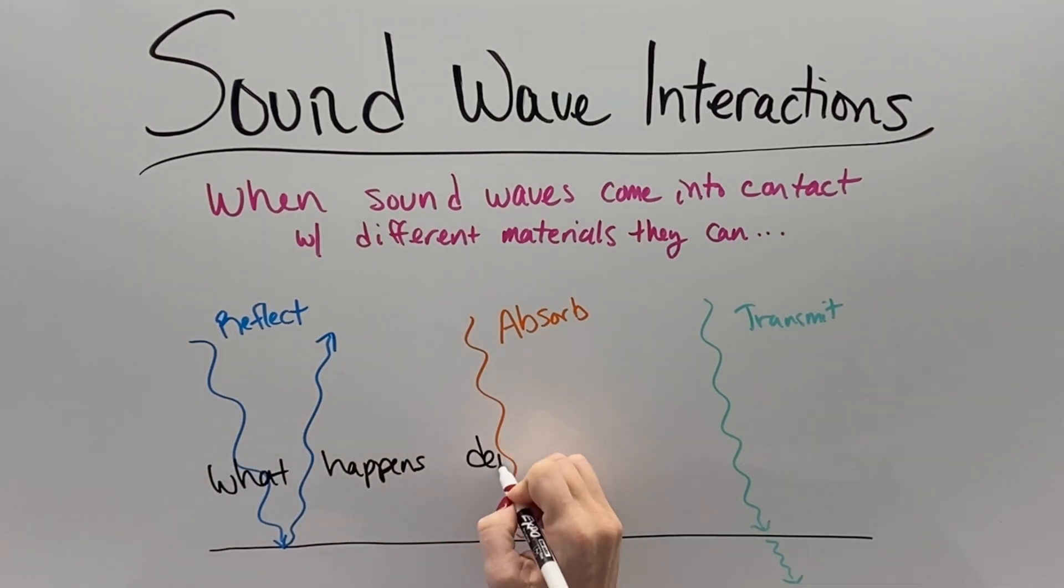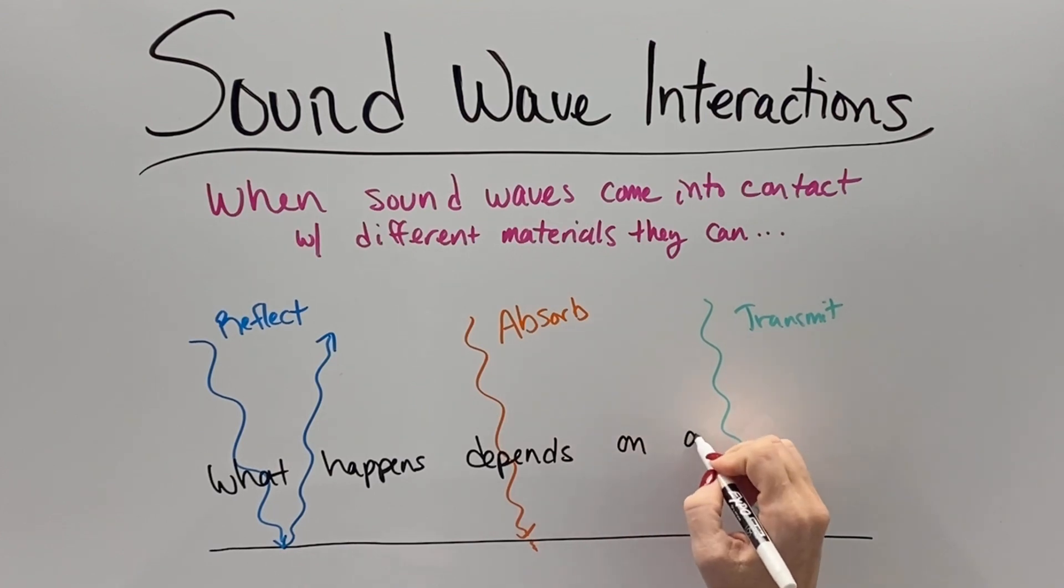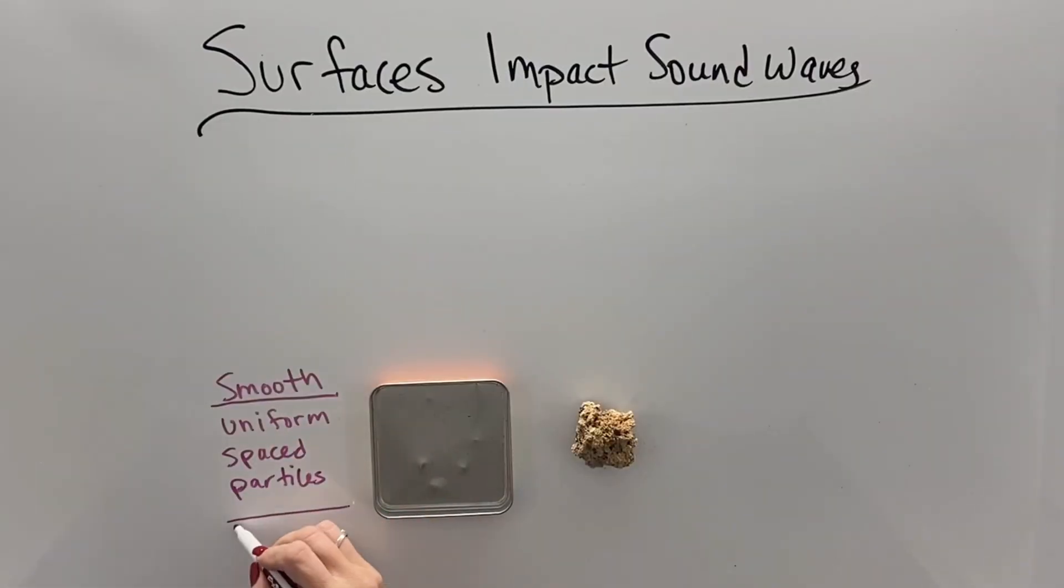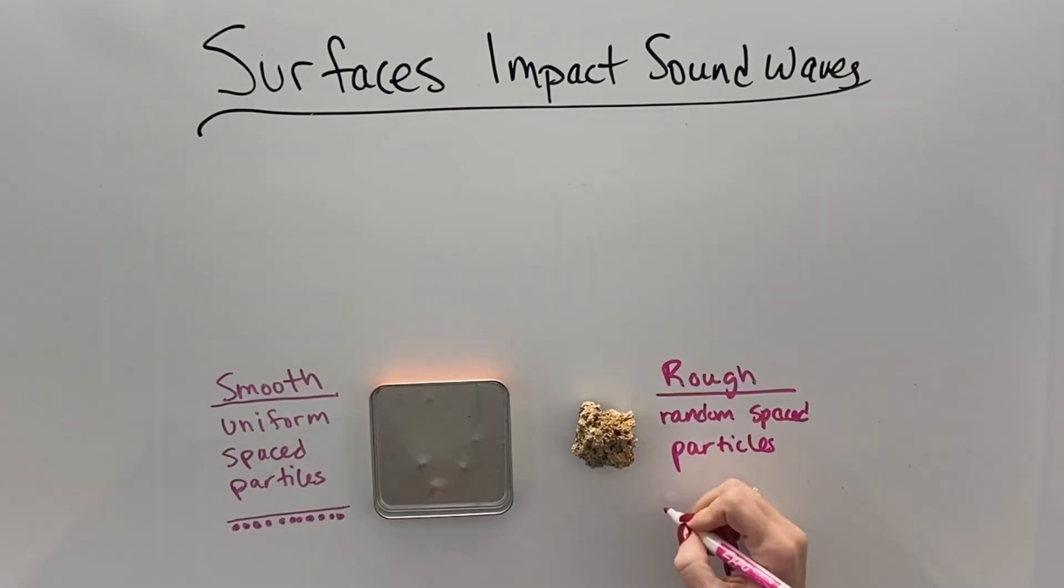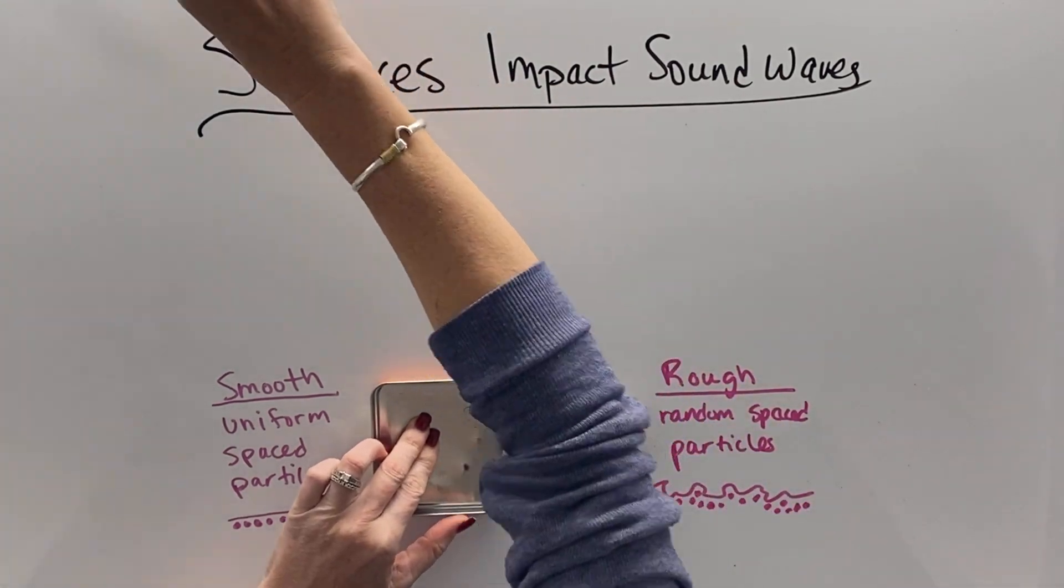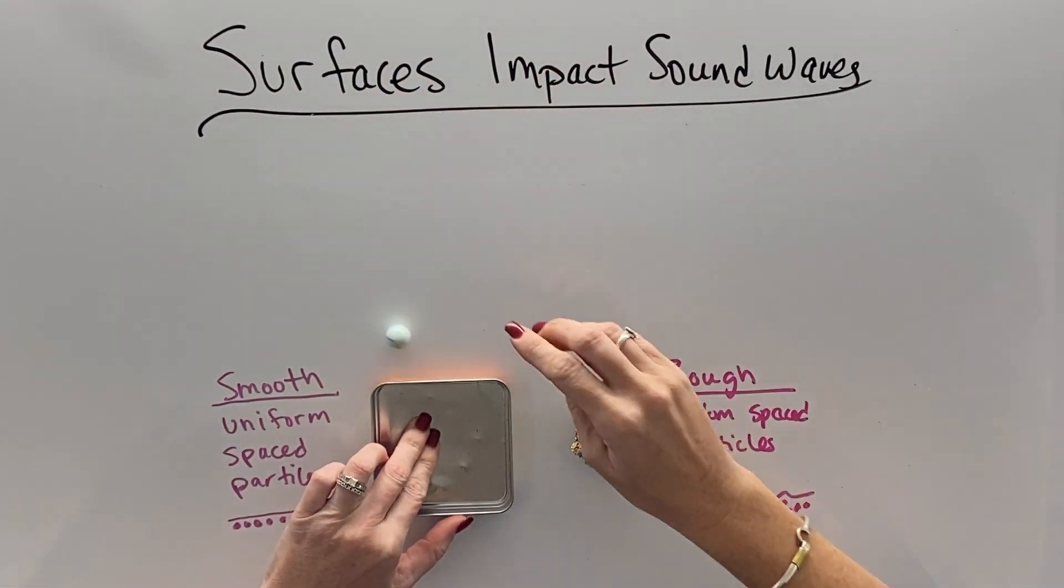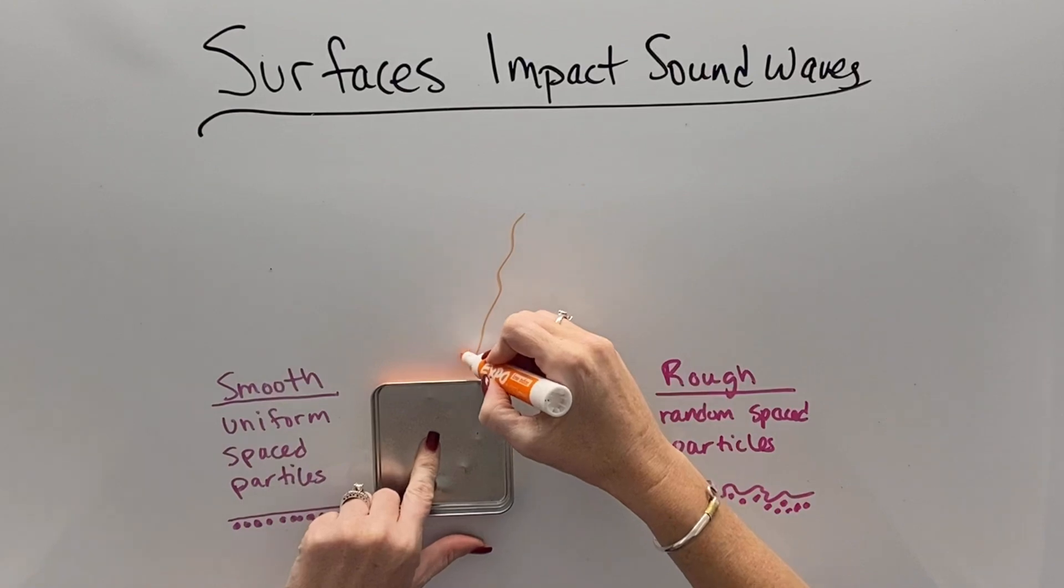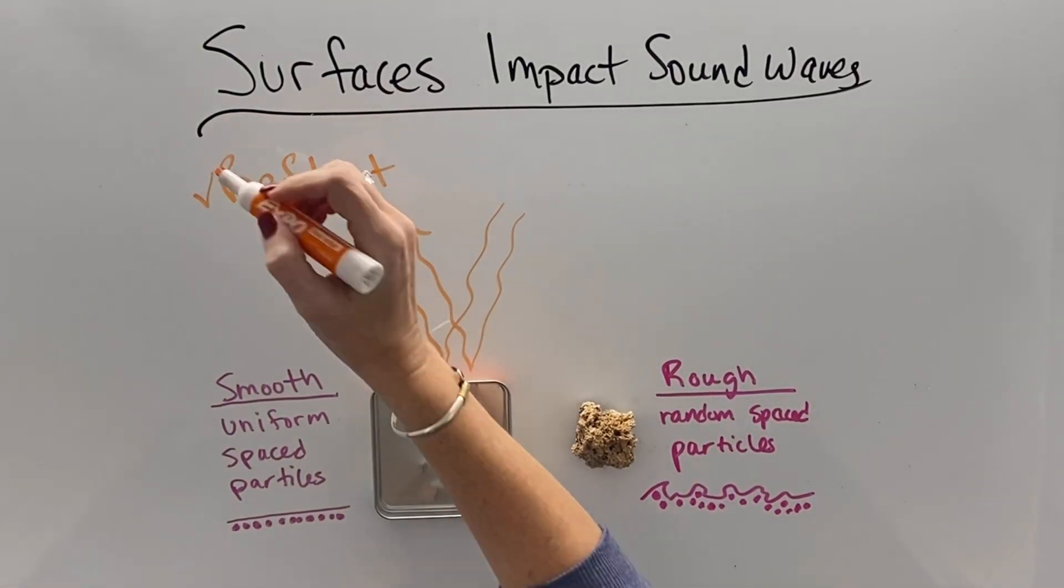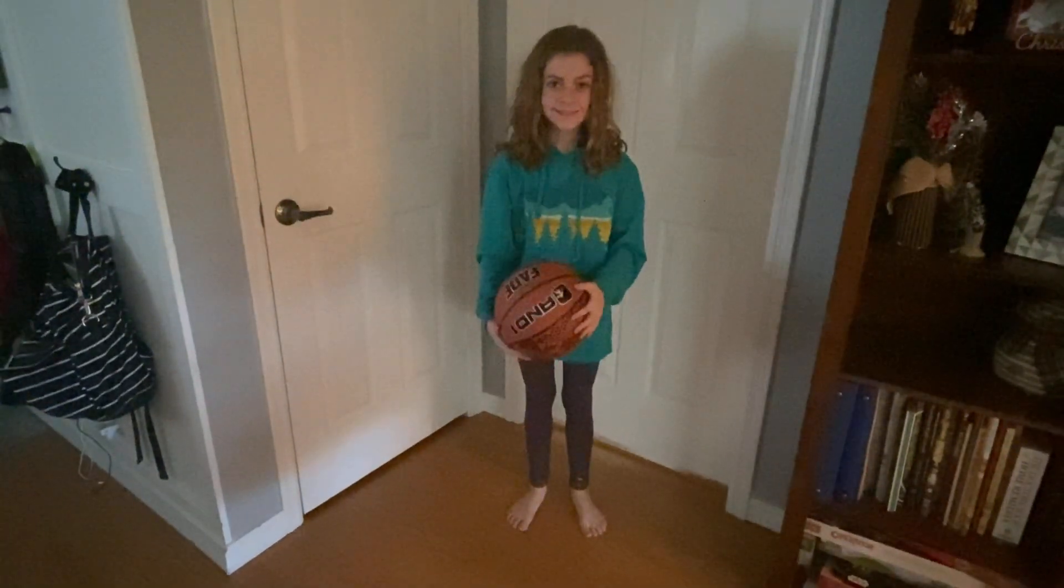What happens when sound comes into contact with a substance depends largely on a few factors. Smooth substances are smooth because the particles are spaced very uniformly, leaving a smooth surface, whereas rough substances have really random particle spacing. So when you bounce an object off of a smooth surface, it bounces off equal and opposite to the direction it came in, like Newton's third law says, which gives us a reflection. That's why mirrors reflect and this ball bounces off the floor.